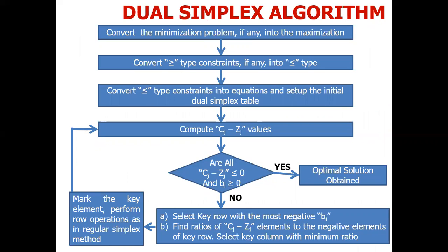So what is the algorithm? In step number one, first of all, we convert the problem into the maximization case. If it is a minimization problem, then we maximize it. If it is already maximized, then it is okay. To maximize it, we multiply the objective function on both sides by minus one.